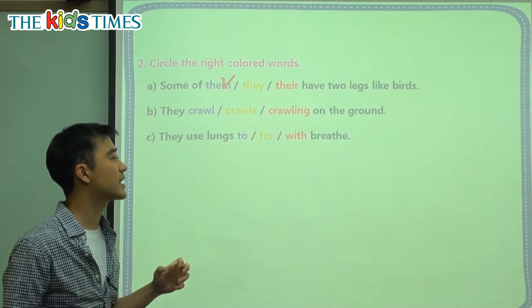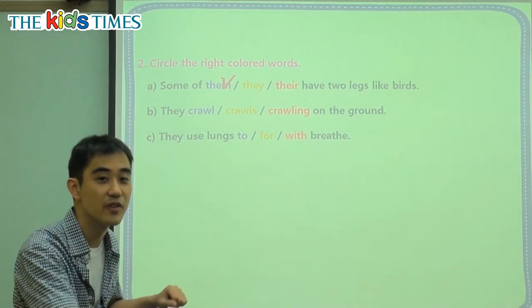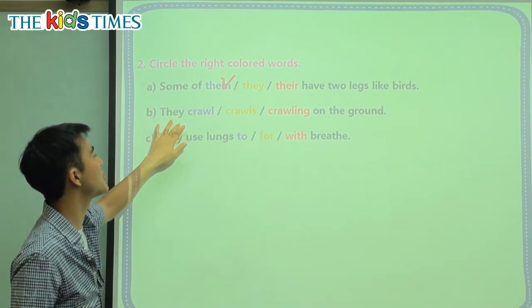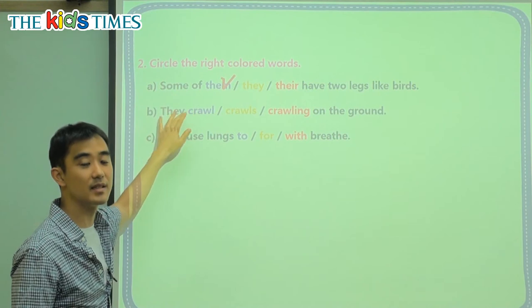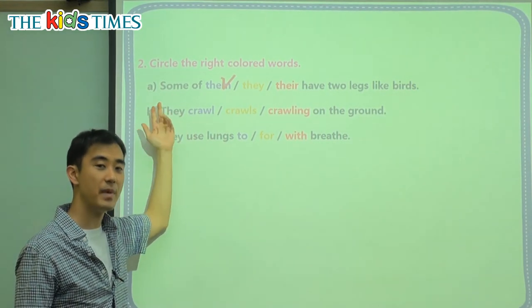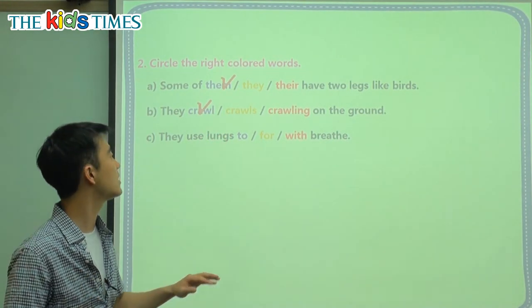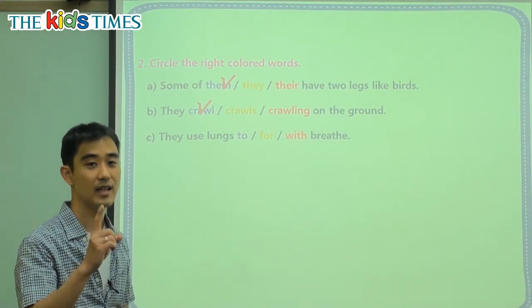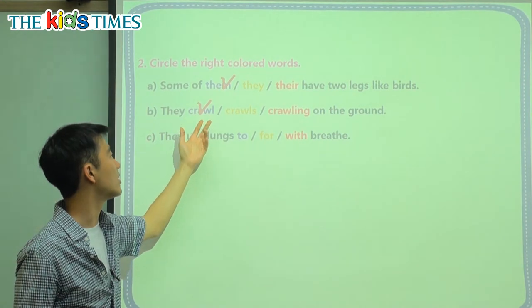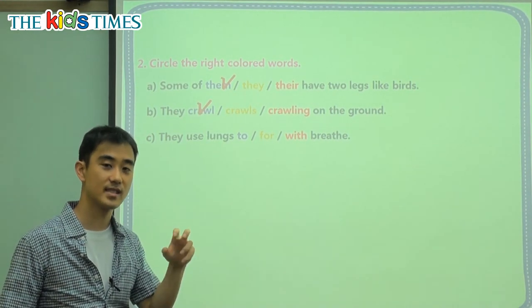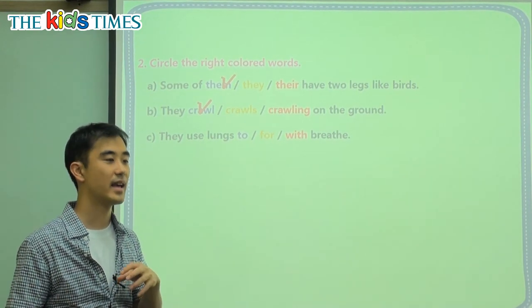B: they blank on the ground. The word crawl is when a baby or a snake is on the floor moving like this. Now we have the subject 'they' — there are many snakes and many earthworms. Because we have a plural subject, we use a verb without an S. For example, 'he crawls' because he is one person. But if it's 'they,' it's 'they crawl.' When it's just one subject, we use the S: he eats. They eat.